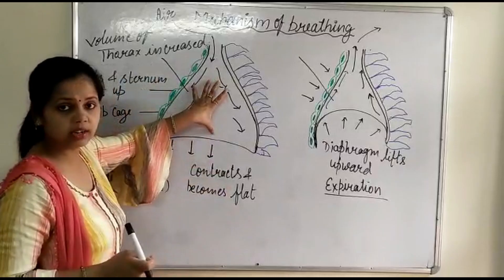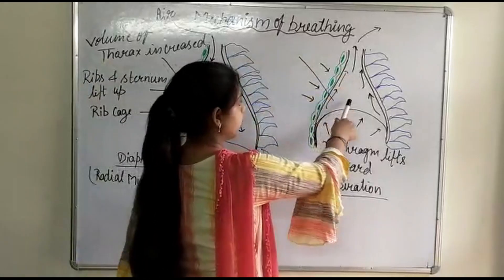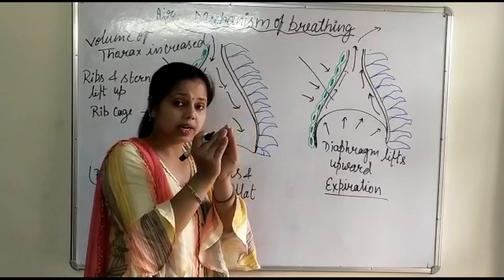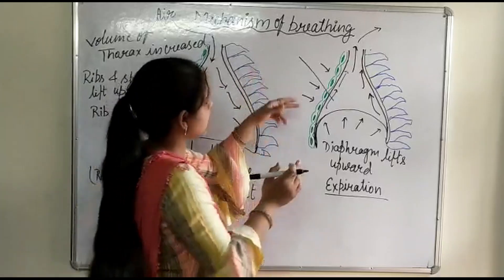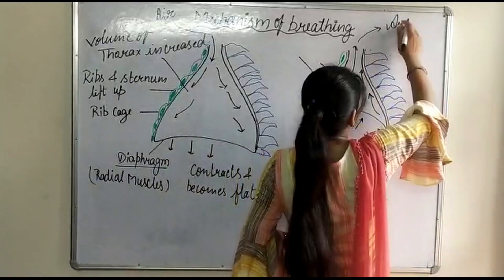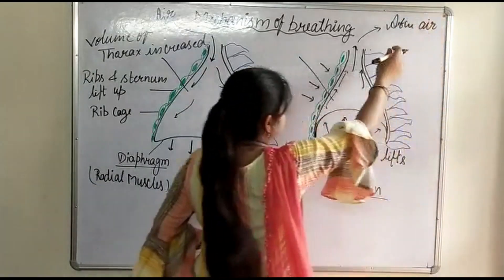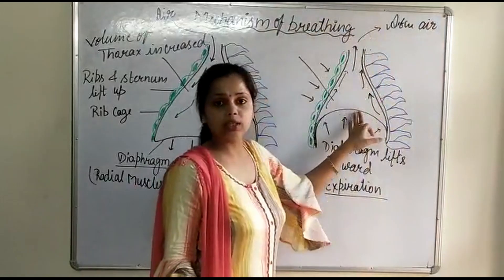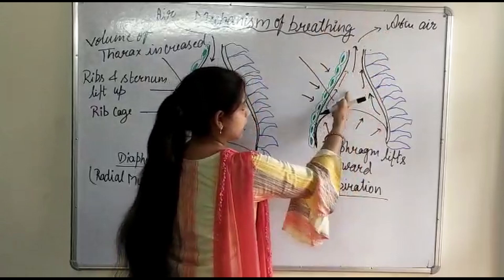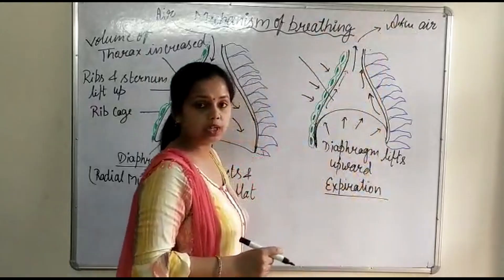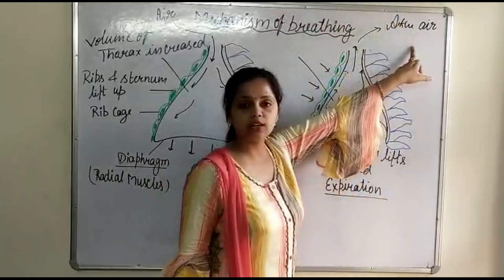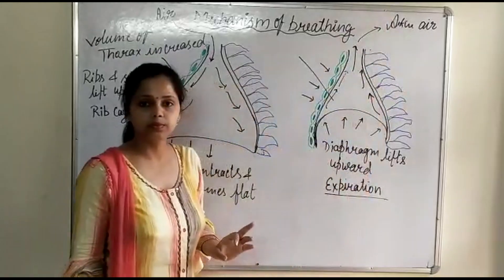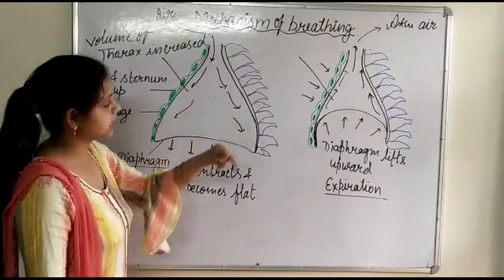When the volume of the thoracic cavity decreases, the pressure of the air inside the lungs increases. The atmospheric pressure outside is now lower, while the pressure inside is higher. So air will move from higher pressure inside the lungs to the lower atmospheric pressure outside. After gas exchange, the air is released outside. This is how the pressure gradient drives expiration.